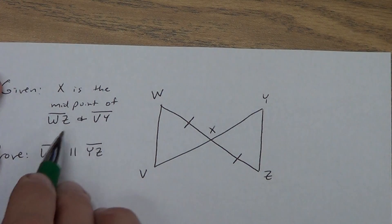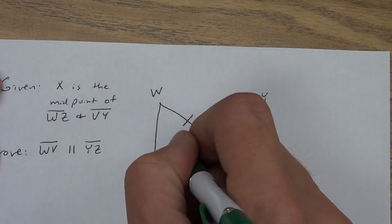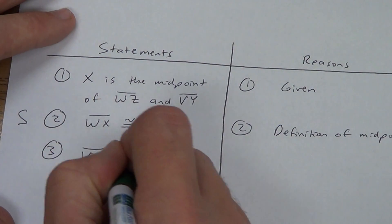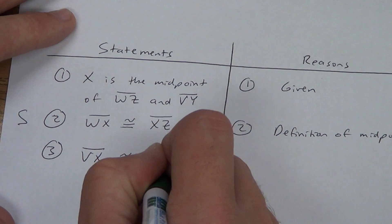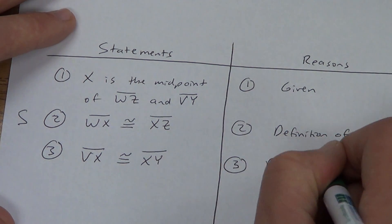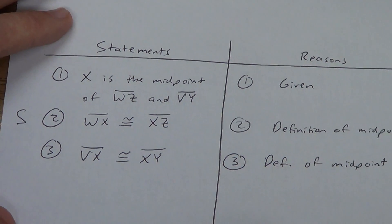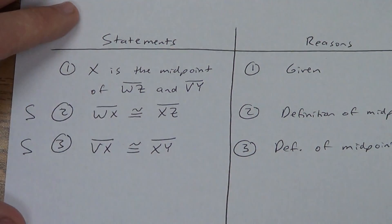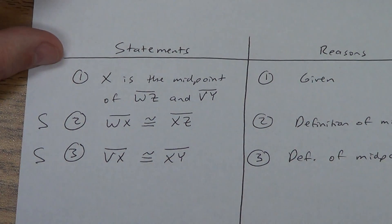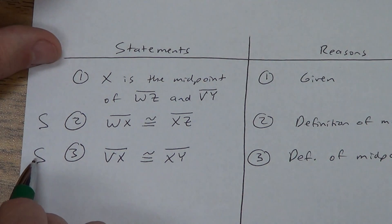X was also the midpoint of VY, so VX has to be congruent to XY — definition of a midpoint. That's also a side. Remember, stop and ask yourself: do I have enough information? Is two sides enough to prove I have congruent triangles? No, it isn't.